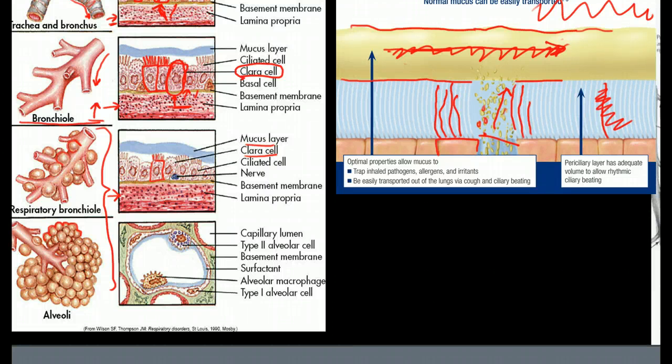The alveoli itself, there are two basic types of cells. There's the type 1 alveolar cells, and these are the flat, very thin, pancake-like cells that provide the primary surface area.